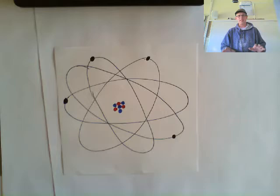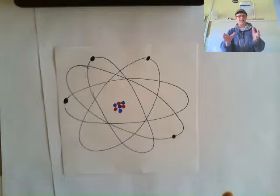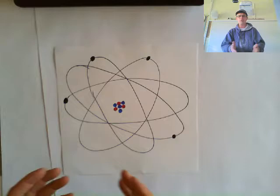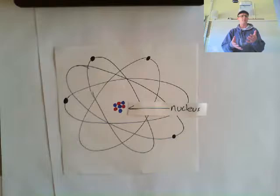The atom itself is made up of smaller things. We said that atoms are so tiny and they're the building blocks of all stuff, and yet they are made up of even smaller building blocks. We call these things subatomic particles. In the center of the atom is the nucleus.